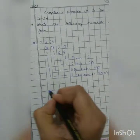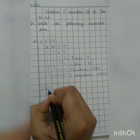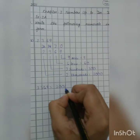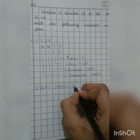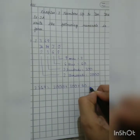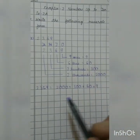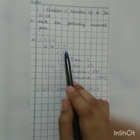2,000. So 2,369 can be written as 2,000 plus 300 plus 60 plus 9. We have to expand them according to their place values.